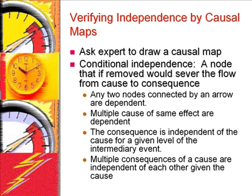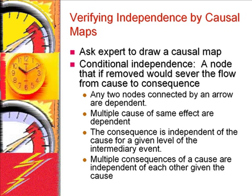One can assess dependencies through analyzing maps of causal relationships. In a causal network, each node describes an event, and the directed arcs between nodes depict how one event causes another. Causal networks work for situations where there is no cyclical relationship among the variables — it is not possible to start from a node, follow the arcs, and return to the same node. An expert is asked to draw a causal network of the events. If the expert can do so, then conditional dependence can be verified by the position of the nodes and arcs. Several rules can be used to identify conditional dependencies in a causal network.